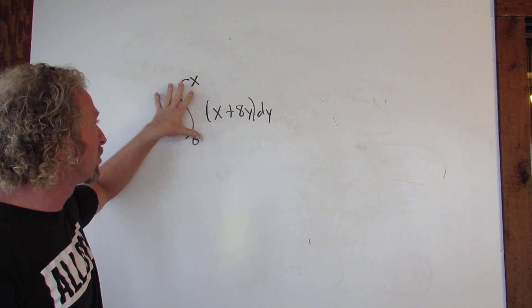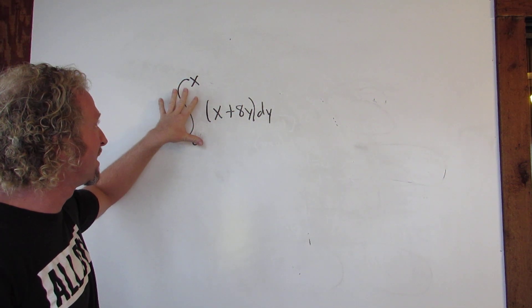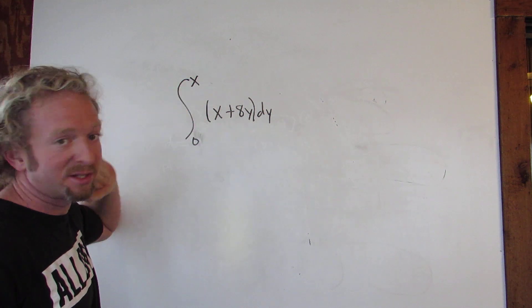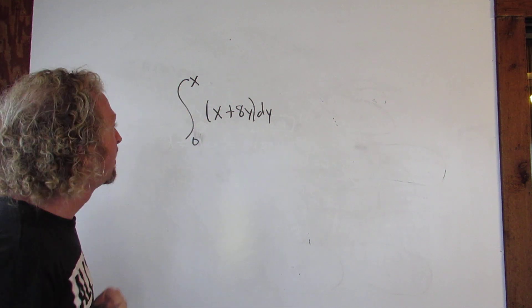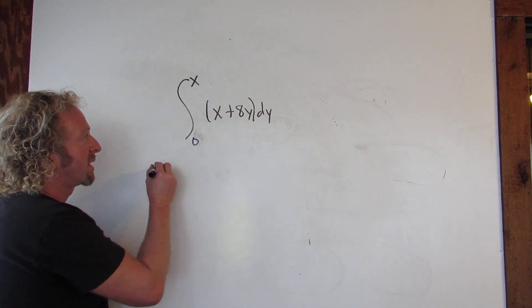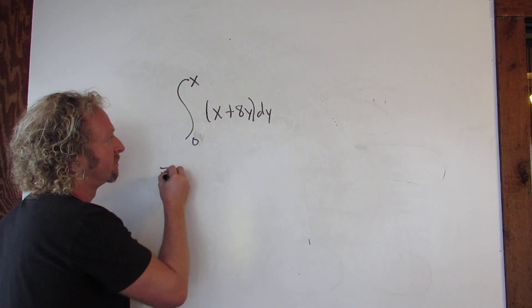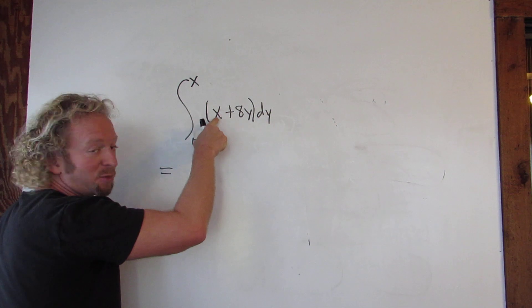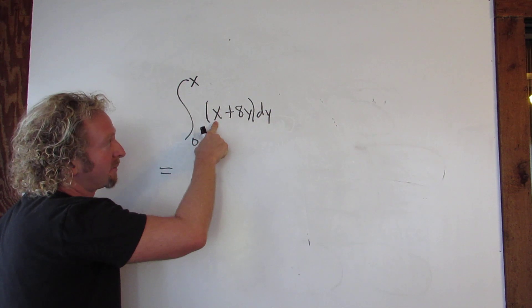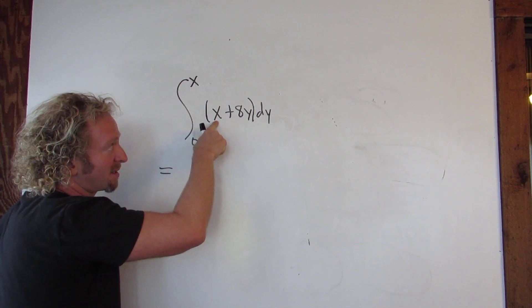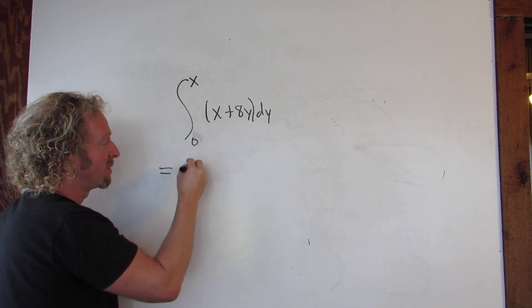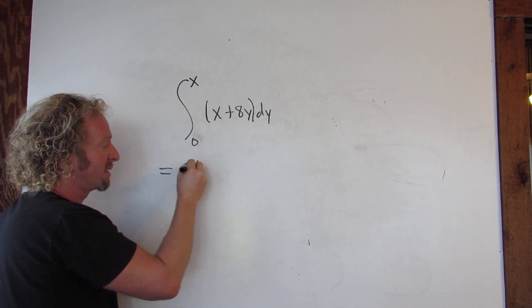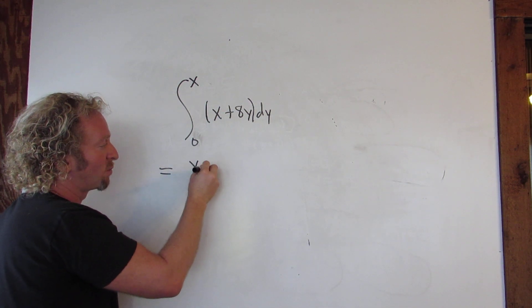So x here, we're treating this as a constant. So to work this out, we integrate x with respect to y. x is a constant, so we simply get x times y.